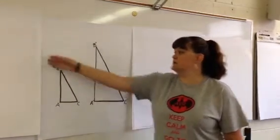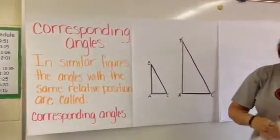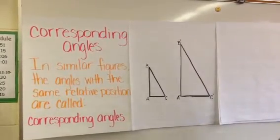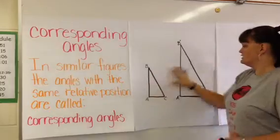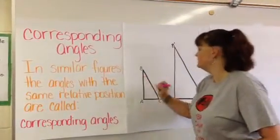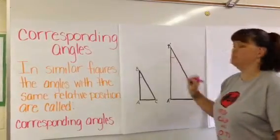The first one we're going to talk about is corresponding angles. Corresponding angles are the angles with the same relative position. So, in our two triangles here, we have angle B, which corresponds to angle B'.